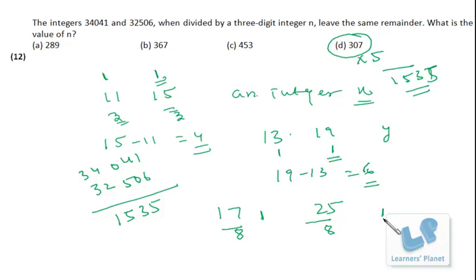By 8 you'll get the same remainder as 1 and 1. The same concept we have used here. I hope you are clear.